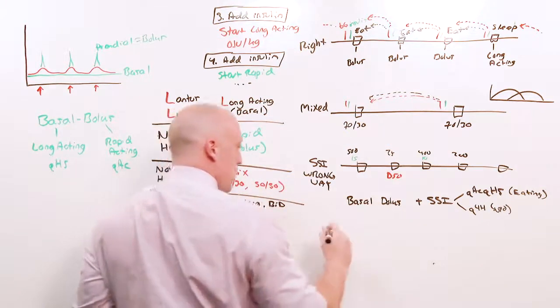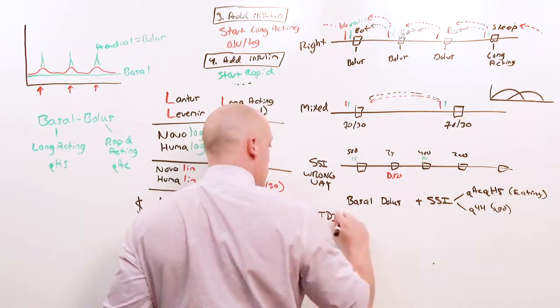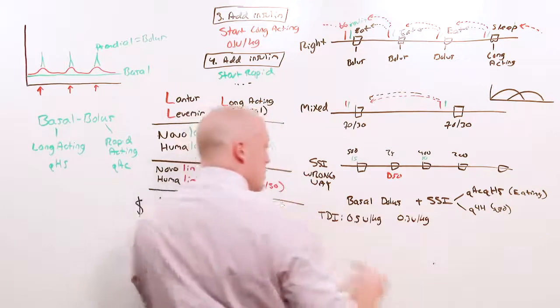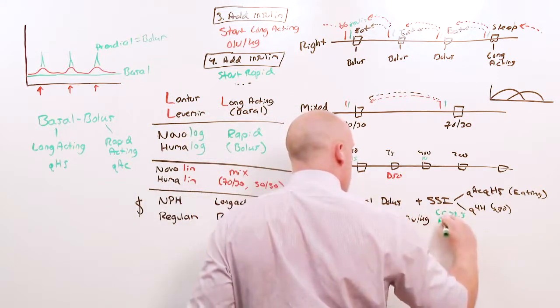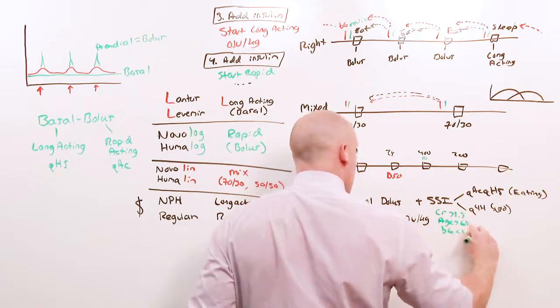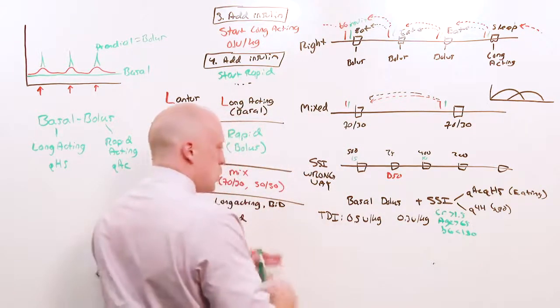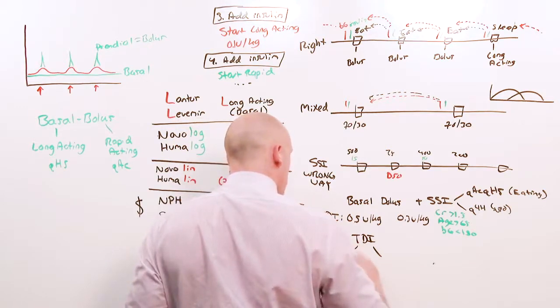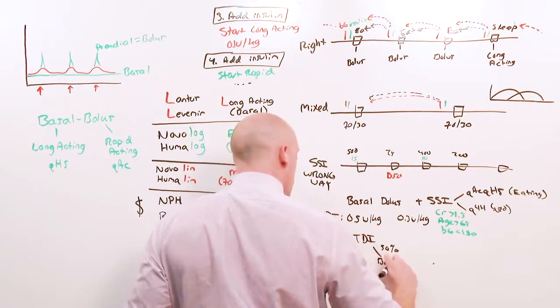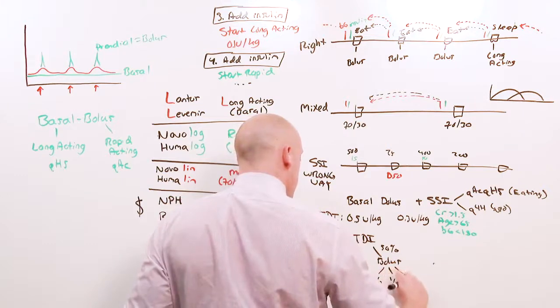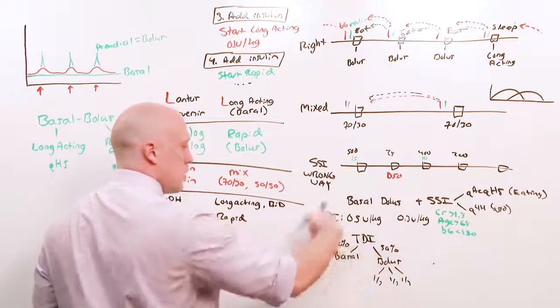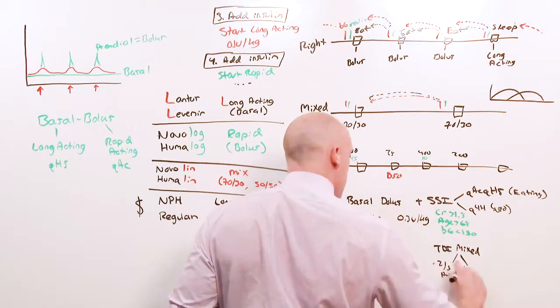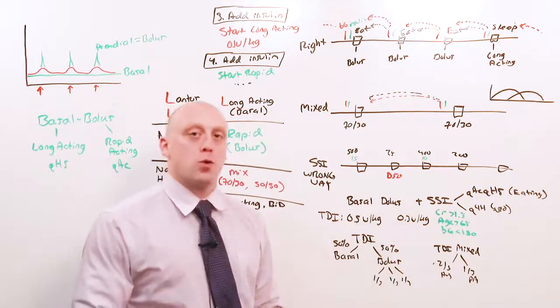In the hospital, basal bolus goes like this. You will choose your total daily insulin based on either 0.5 units per kg or 0.3 units per kg. 0.3 units is if their creatinine is greater than 1.5, their age is greater than 65, or their presentation of glucose is less than 180. Whichever one you pick doesn't matter. The total daily insulin is going to be divided up 50% into basal, 50% into bolus, and bolus is divided into 3 meals.